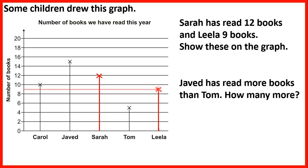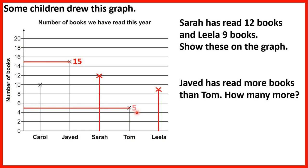Now Javed has read more books than Tom. How many more? We can see that Javed has read 15 books, because that's between 14 and 16. And Tom has read between 4 and 6, so that's 5 books. The question asks how many more, so we need to find the difference. 15 minus 5 is 10, so Javed has read 10 more books than Tom.